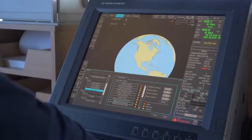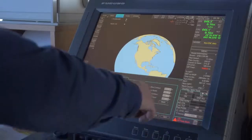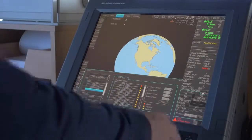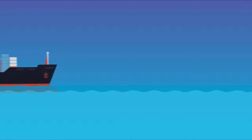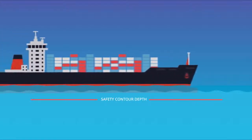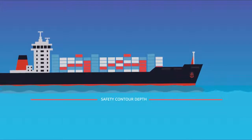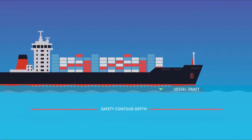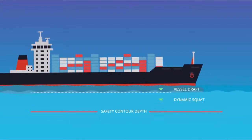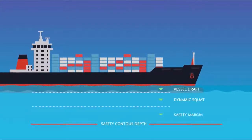Additionally, watch keepers should verify the safety contour and spot depth settings on the ECDIS. The safety contour depth is the broadest depth setting, providing a visible boundary between safe and unsafe water. It is set by the navigator to reflect the vessel safety draft, commonly calculated as the vessel draft plus dynamic squat plus the safety margin.